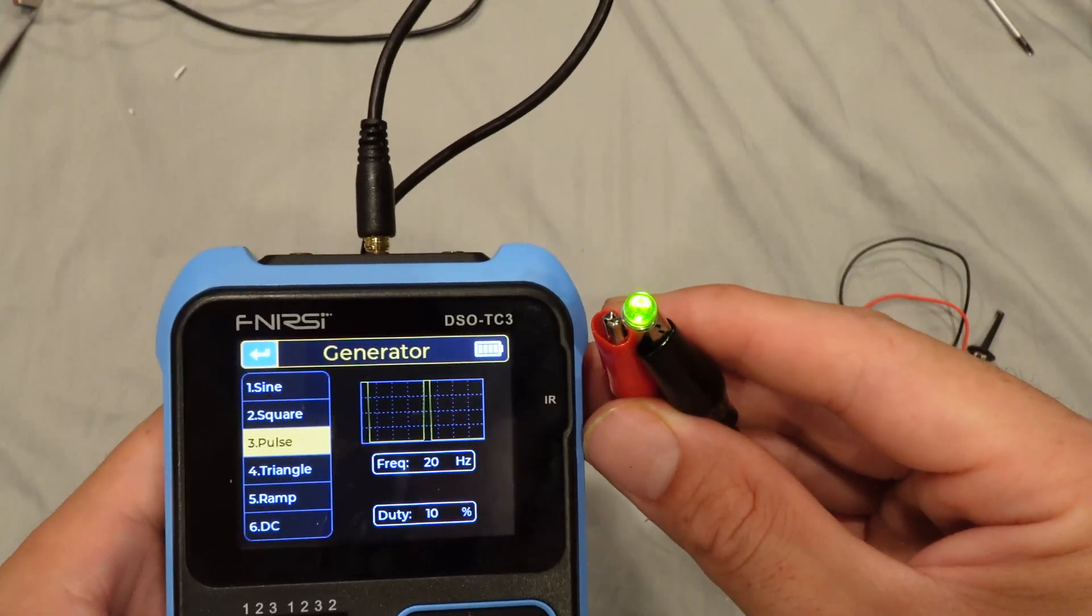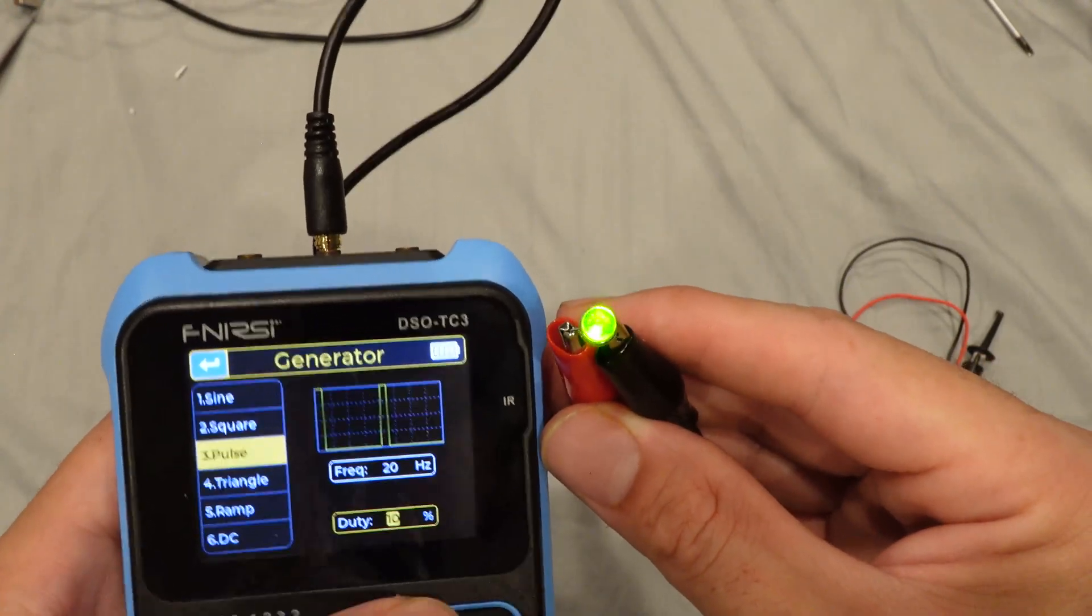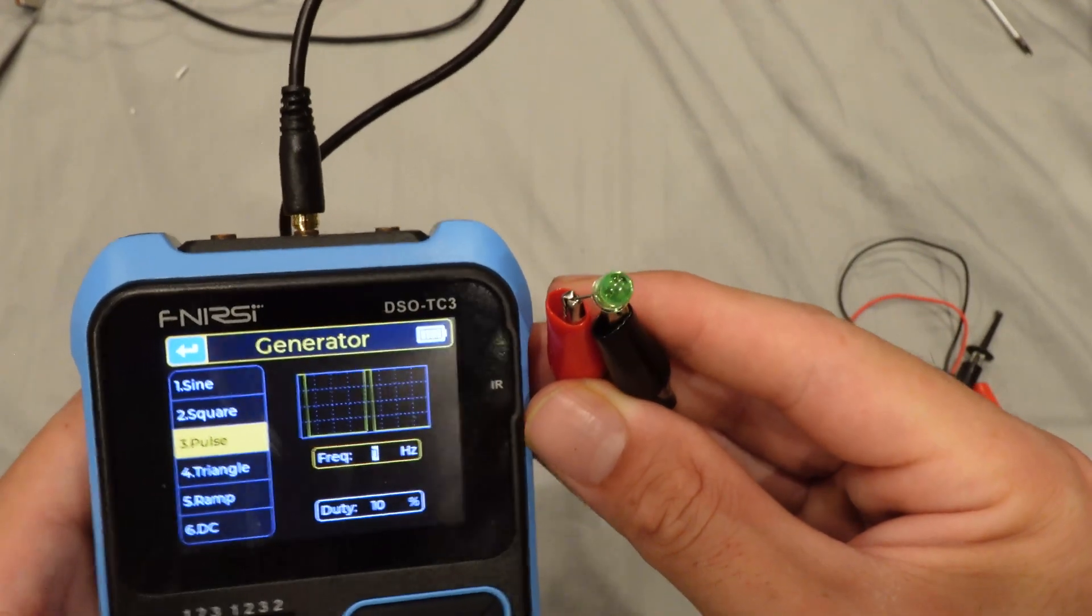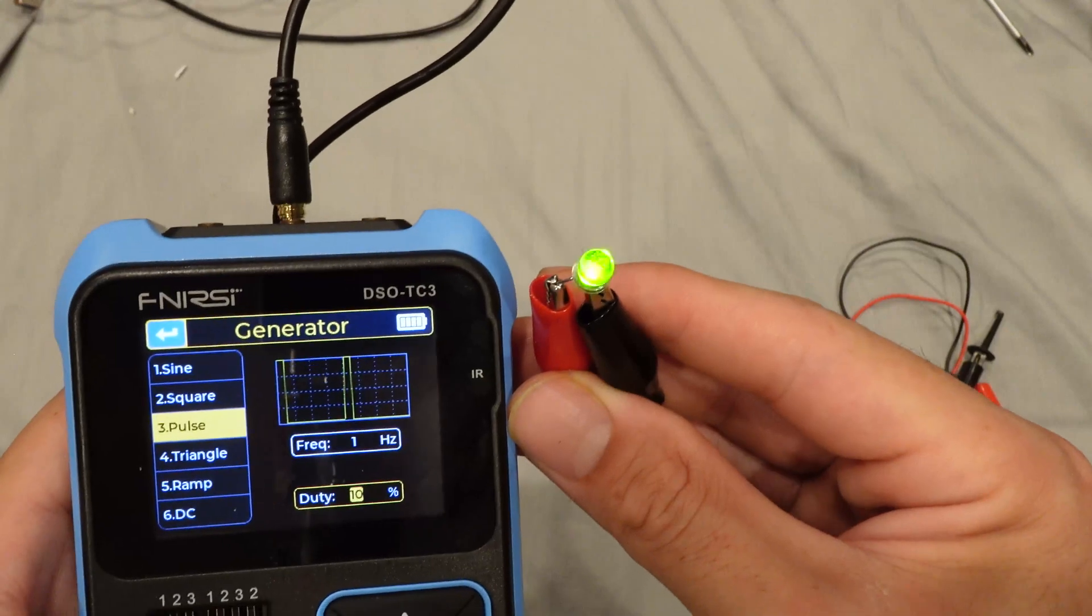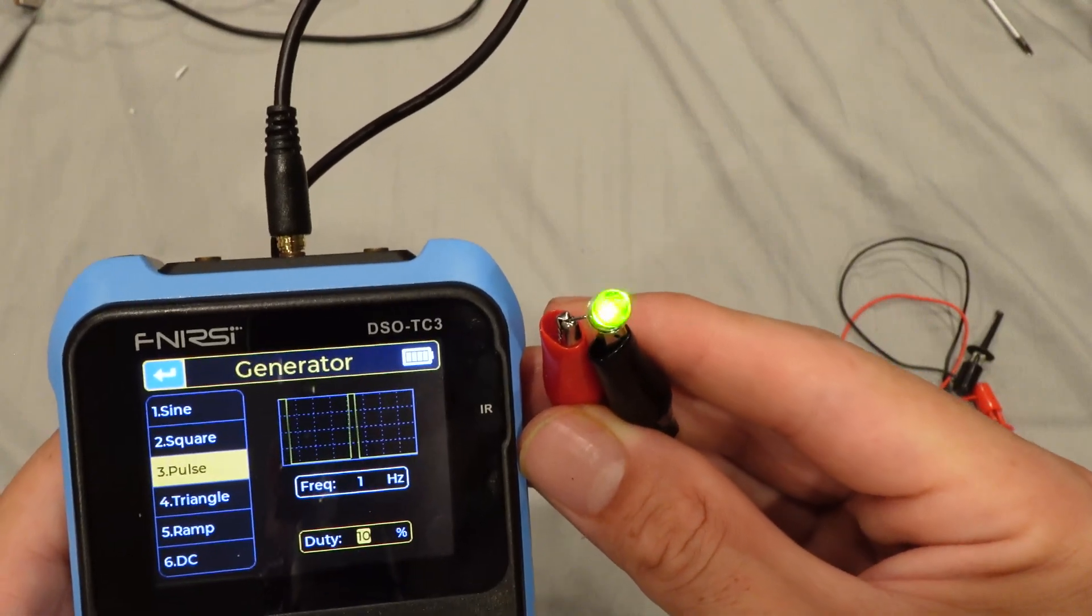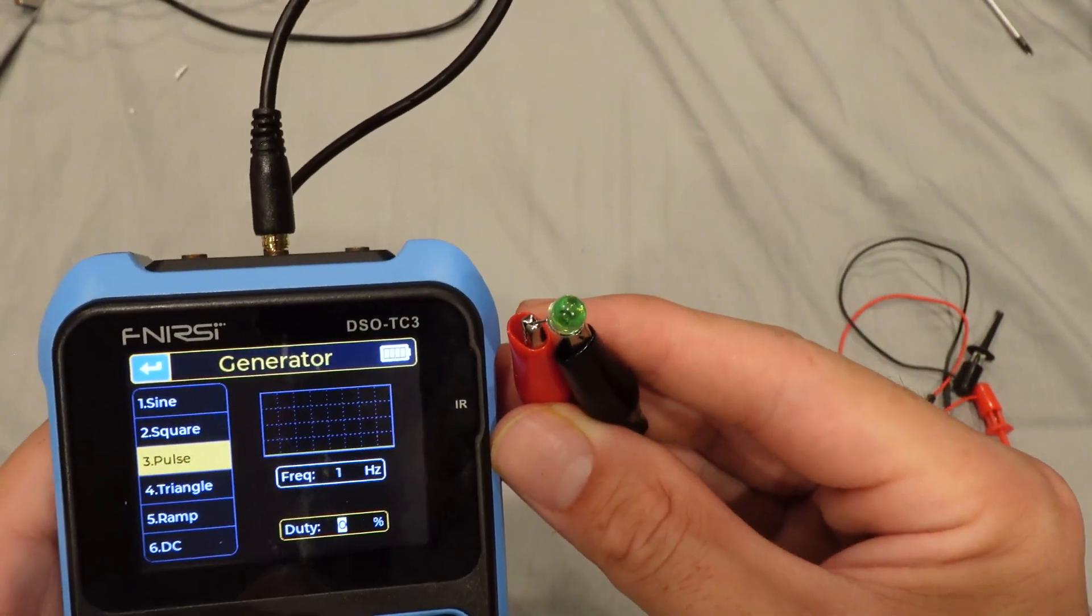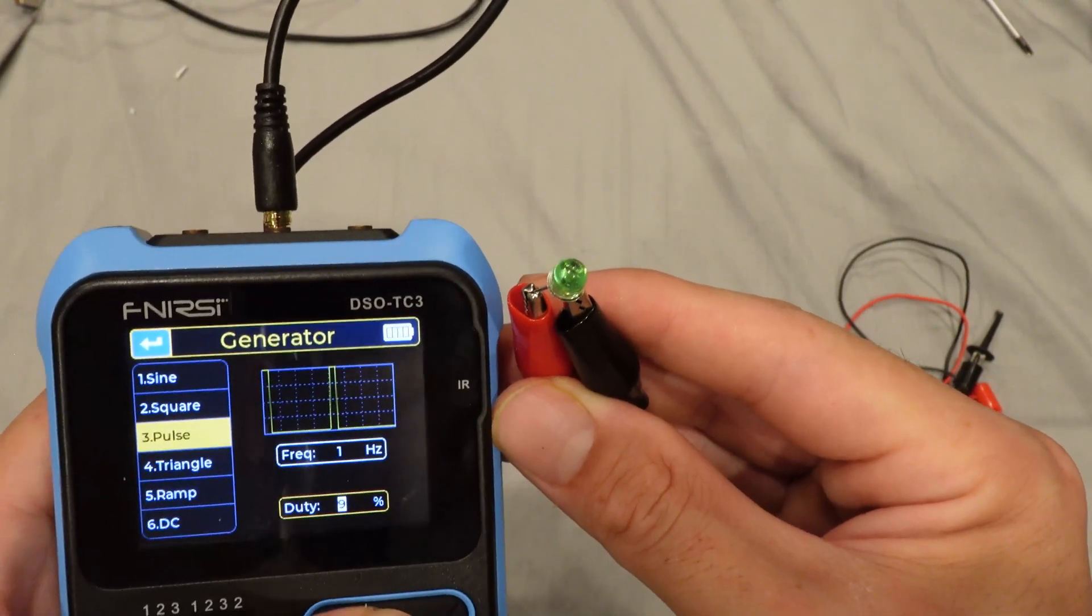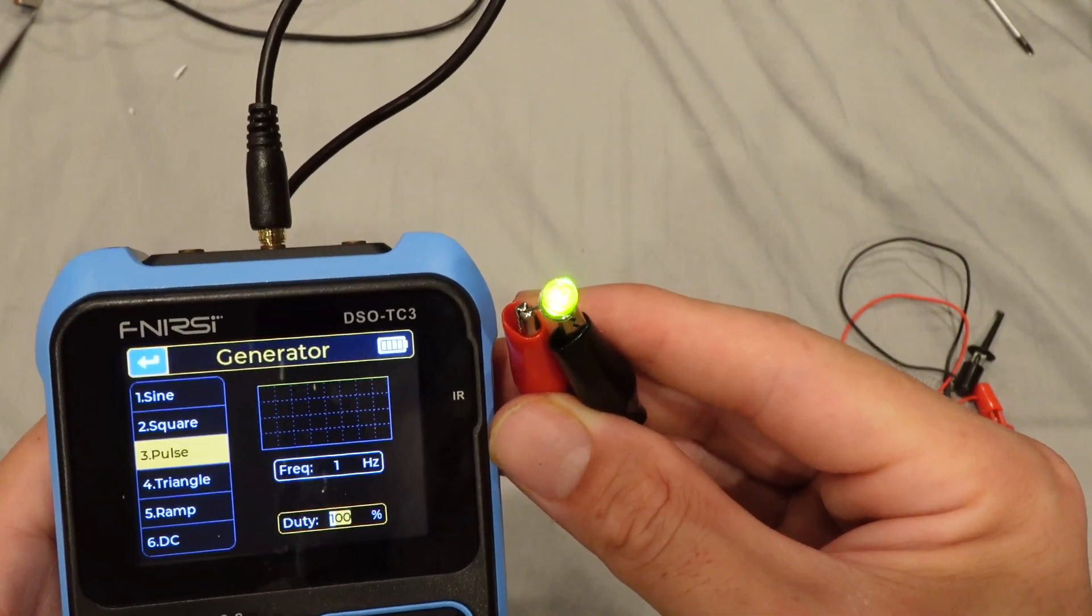But I like pulse waveform better because you can also change the duty of this. So let's change this hertz to 10 hertz or even 1 hertz, and then go to duty. As you can see, right now 10 percent of the time LED is on. It can decrease that, just like that, all the way to 50 and 100 percent.